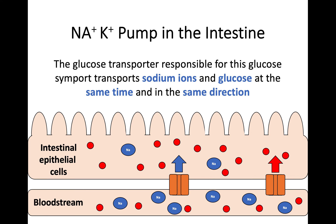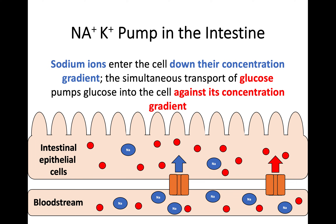The glucose transporters are responsible for moving glucose — they transport sodium ions and glucose at the same time and in the same direction. Sodium ions enter the intestinal epithelial cells down their concentration gradient, moving from higher to lower sodium concentration, which doesn't require energy. But the simultaneous transport of glucose pumps it into the cell against the concentration gradient — from lower to higher concentration — which does require energy.